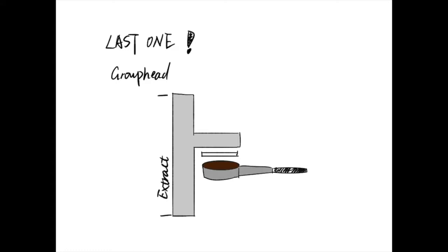During the extraction process, hot water from the boiler is forced through the group head under pressure. The holes in the group head will distribute the pressurized water evenly over the surface of the ground coffee in the portafilter.